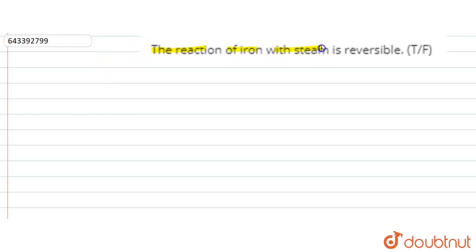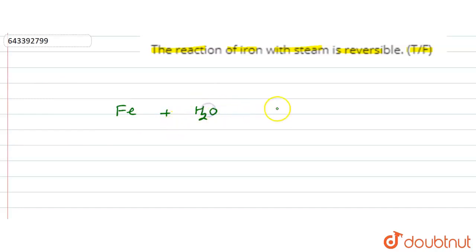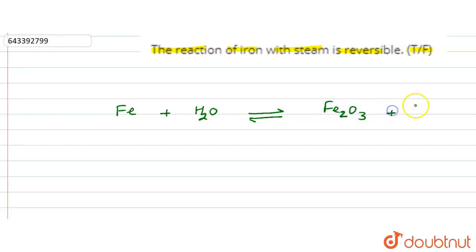The question is: the reaction of iron with steam is reversible. Is this statement true or false? Let us check. Iron plus steam reacts to give products Fe₂O₃ (ferric oxide) and H₂ gas.